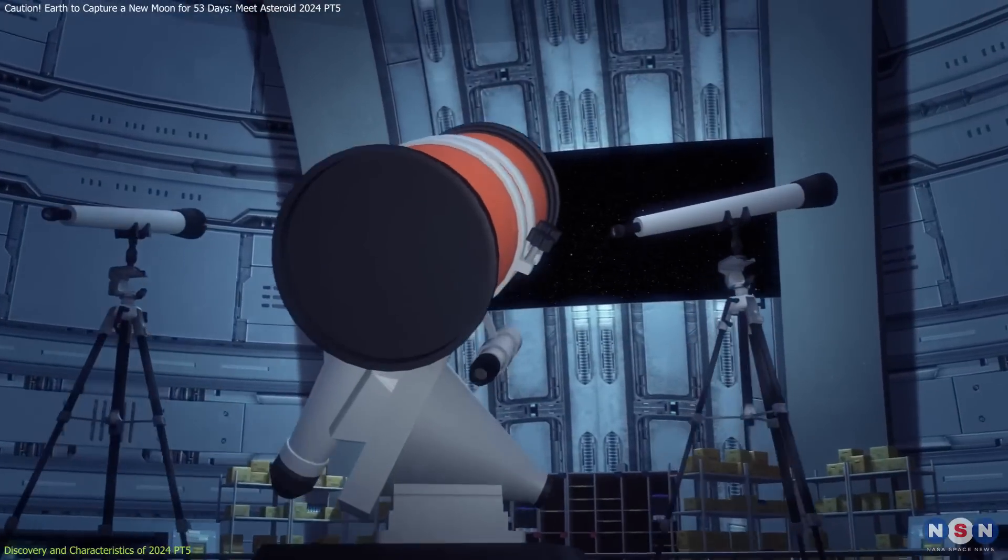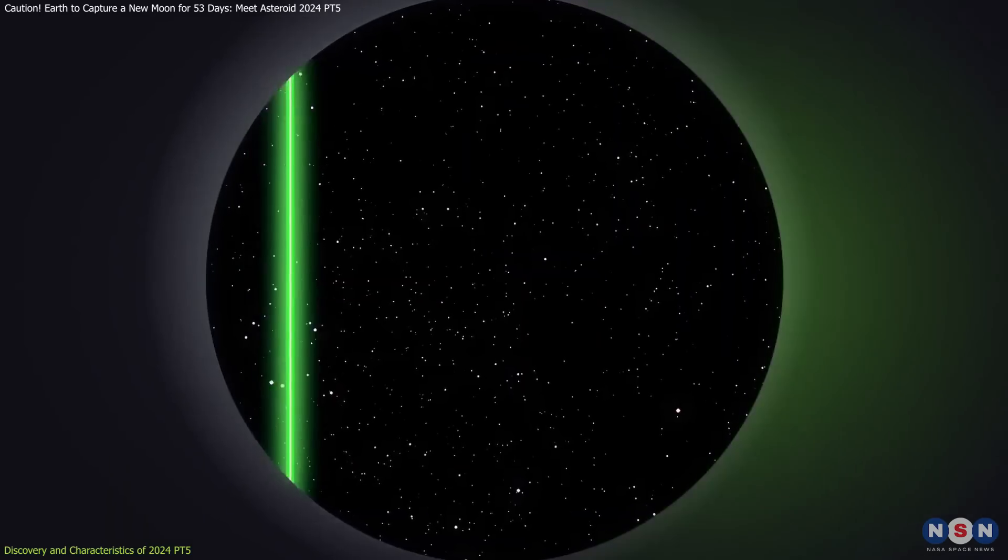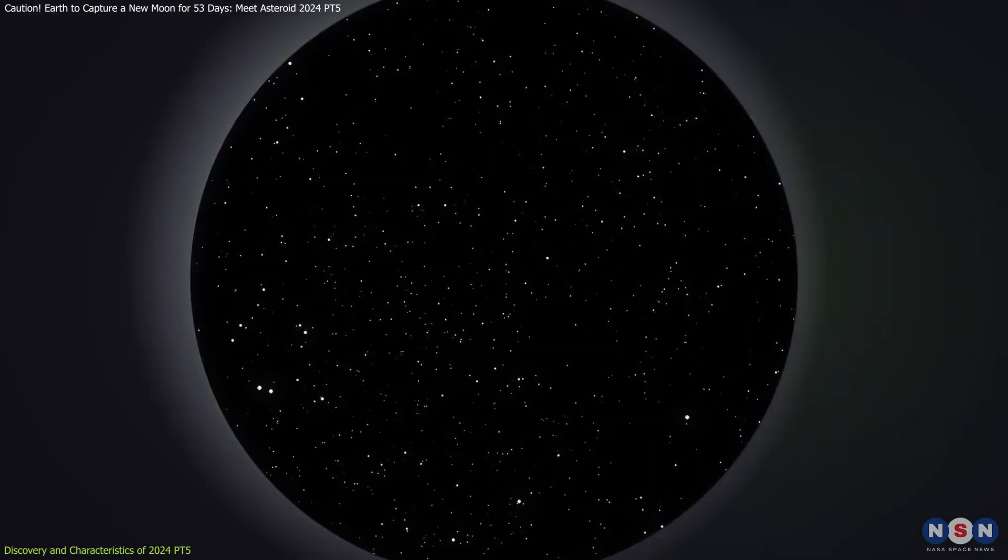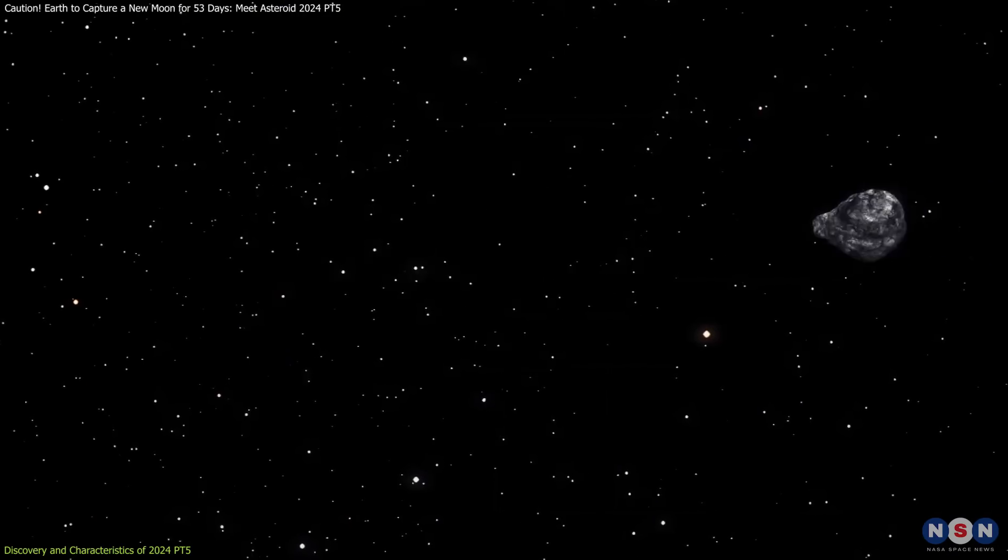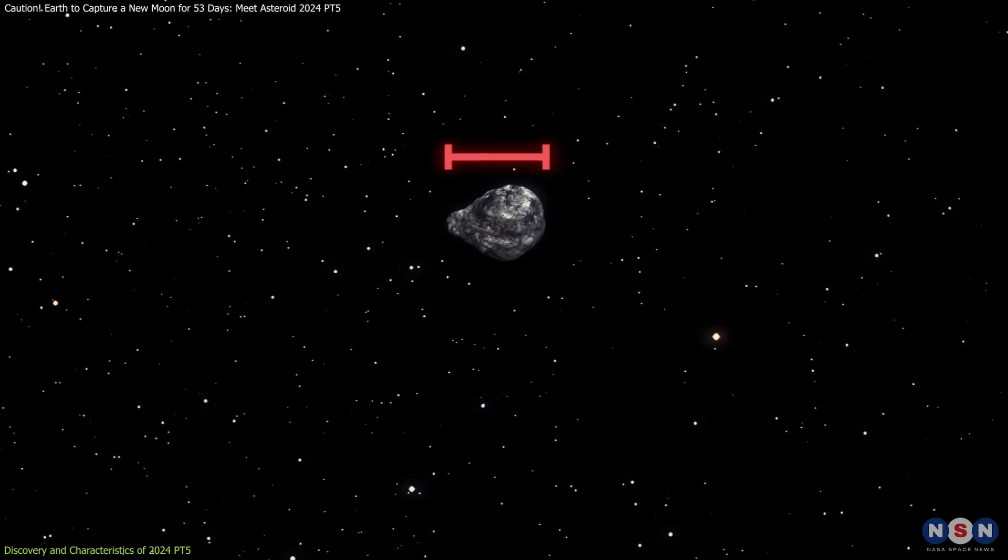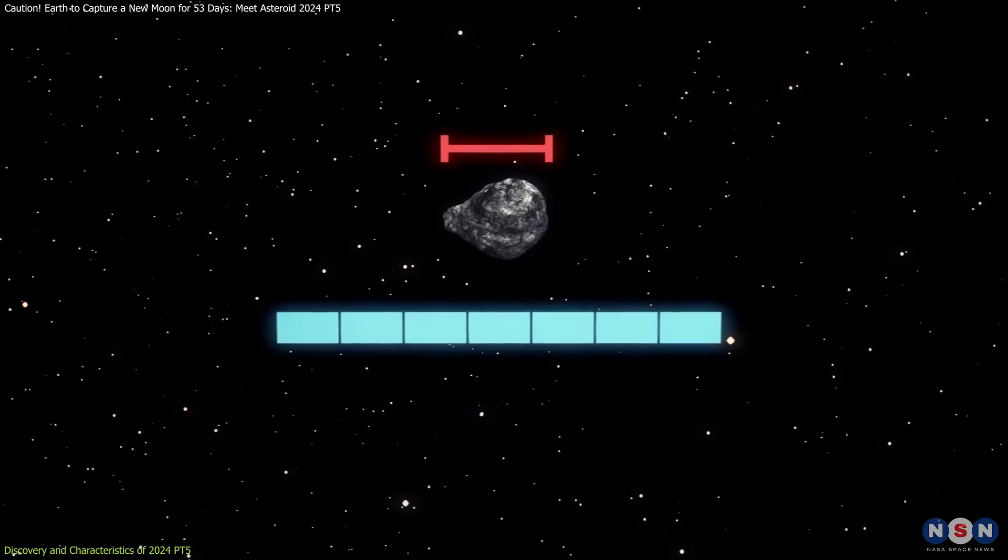ATLAS is a state-of-the-art automated system designed to detect asteroids that might threaten our planet. Its rapid detection allows astronomers to quickly calculate an asteroid's path and assess its potential risks.